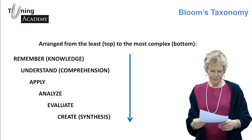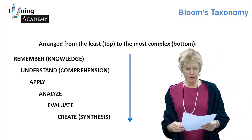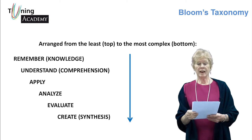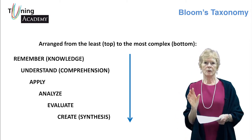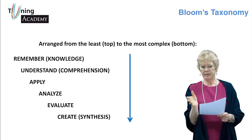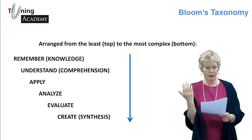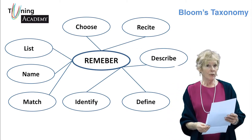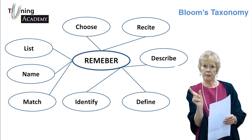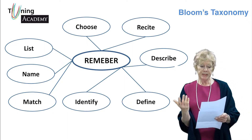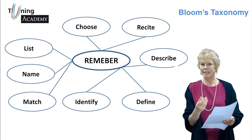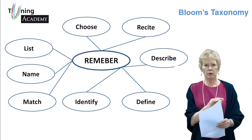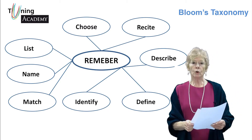You can see from the diagram what Bloom's categories are. Starting from the top, the first and most simple level is remembering — remembering knowledge. This is at a level of shallow processing. The sort of key words for writing your learning outcomes at this level are verbs like describe, identify, label, match, memorize, etc.